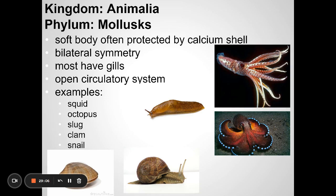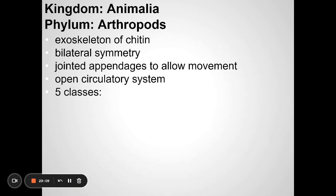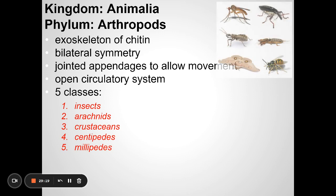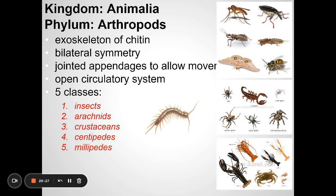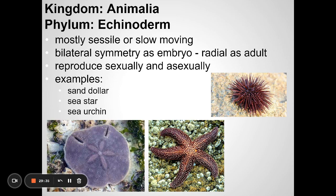Then we have the arthropods: insects, arachnids, crustaceans, centipedes, and millipedes. These are all in the animal kingdom and have an exoskeleton. Echinoderms include sea urchins, sand dollars, and starfish — all in the phylum Echinodermata, and many of them live in the oceans.